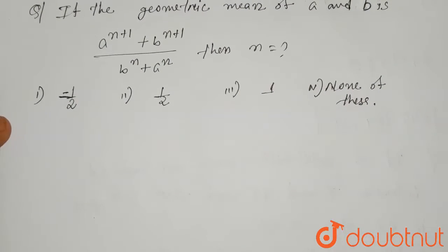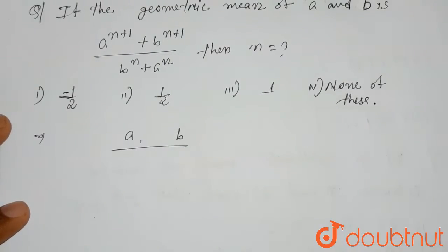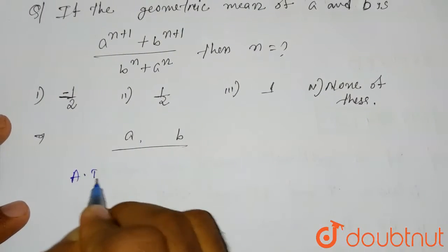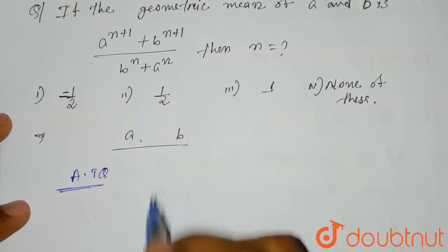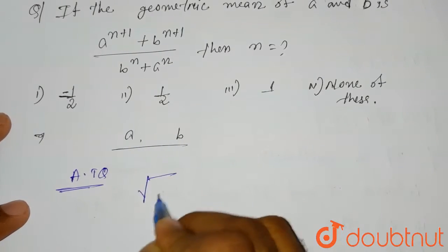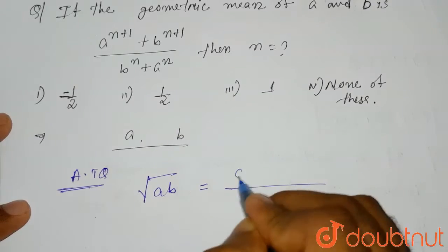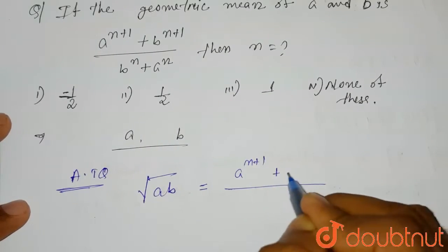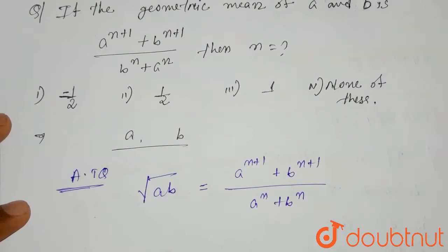So here two numbers are given: a and b. According to the question, the geometric mean of a and b is (a^(n+1) + b^(n+1)) divided by (a^n + b^n). The geometric mean of a and b equals the square root of ab, which according to the question equals (a^(n+1) + b^(n+1)) / (a^n + b^n).